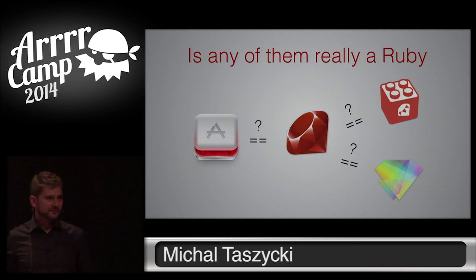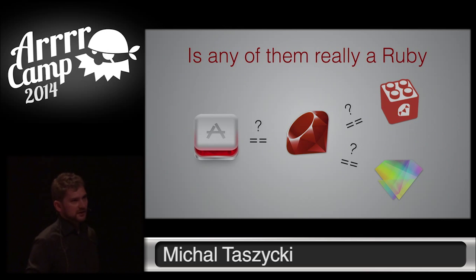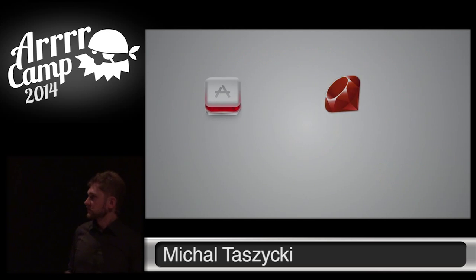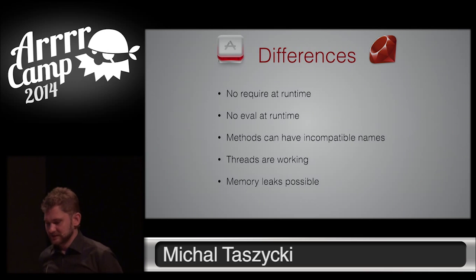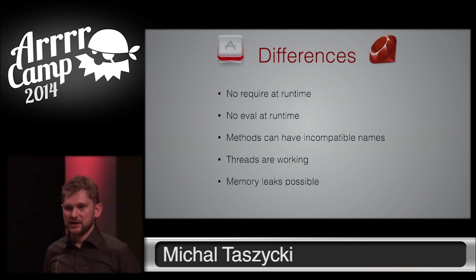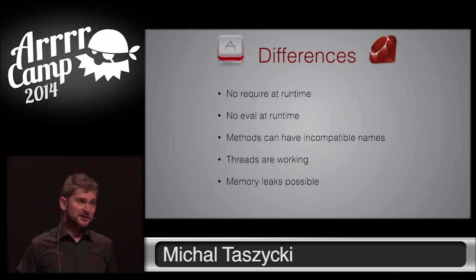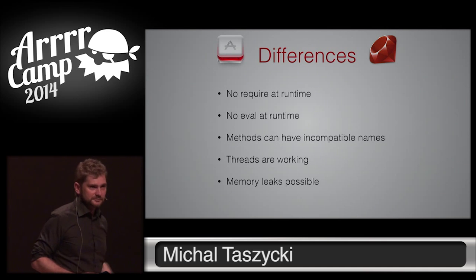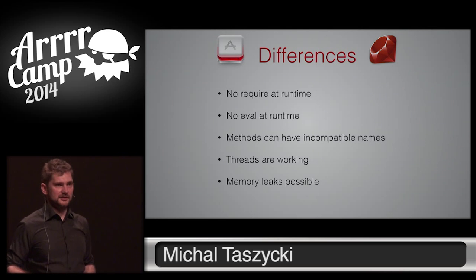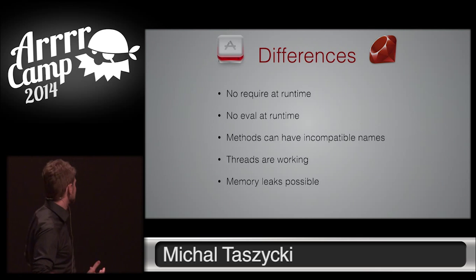But are any of those Ruby-like things really Ruby? Well, kind of. There are some differences. For example, in RubyMotion, we don't have require at runtime. Everything is statically compiled and Apple doesn't allow us to generate code at runtime. So we get a warning when we require something. There is no eval at runtime. We can still use metaprogramming, but not the one that involves parsing Ruby at runtime.